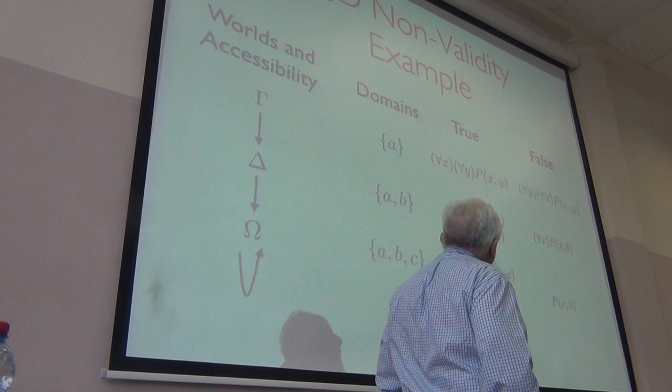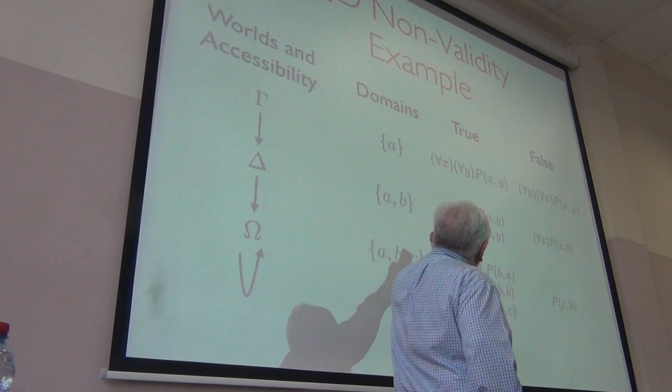And then this one fails up here. Same sort of argument. So you see what you've got. For all X, for all Y is true here. But for all Y, for all X is false here.